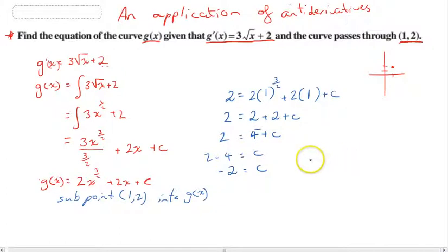Finally, we finish this whole thing off. g(x) = 2x^(3/2) + 2x - 2. Okay, so we got there in the end. And that's a simple application of antiderivatives. Thanks.